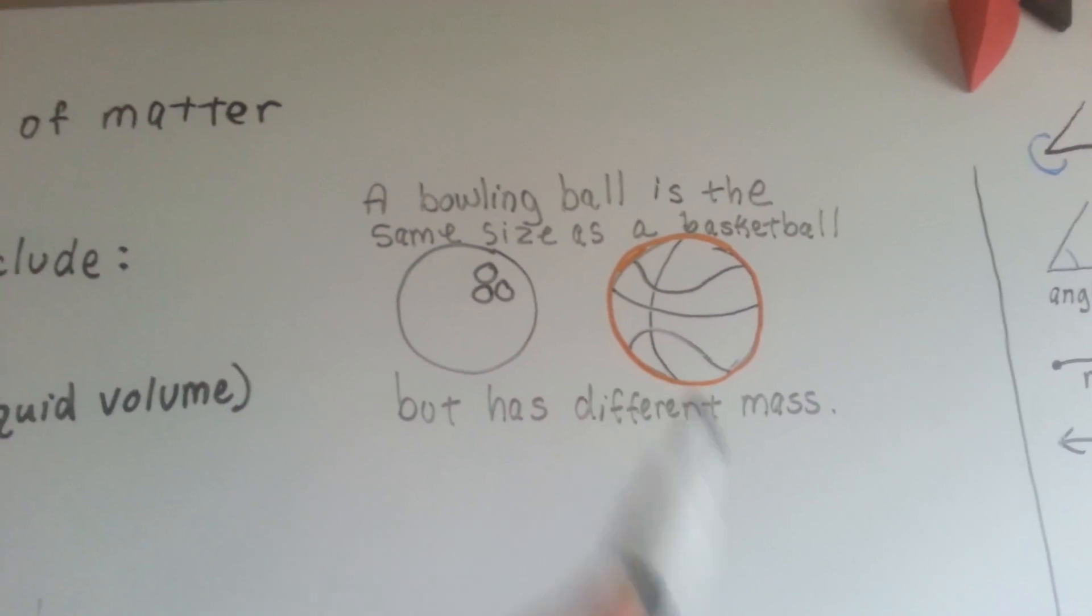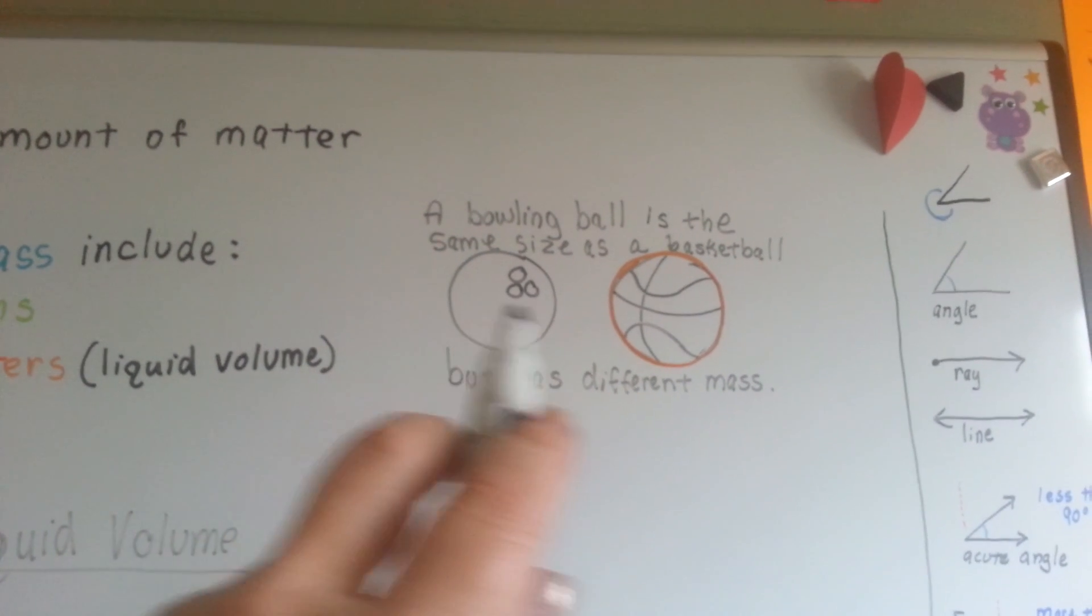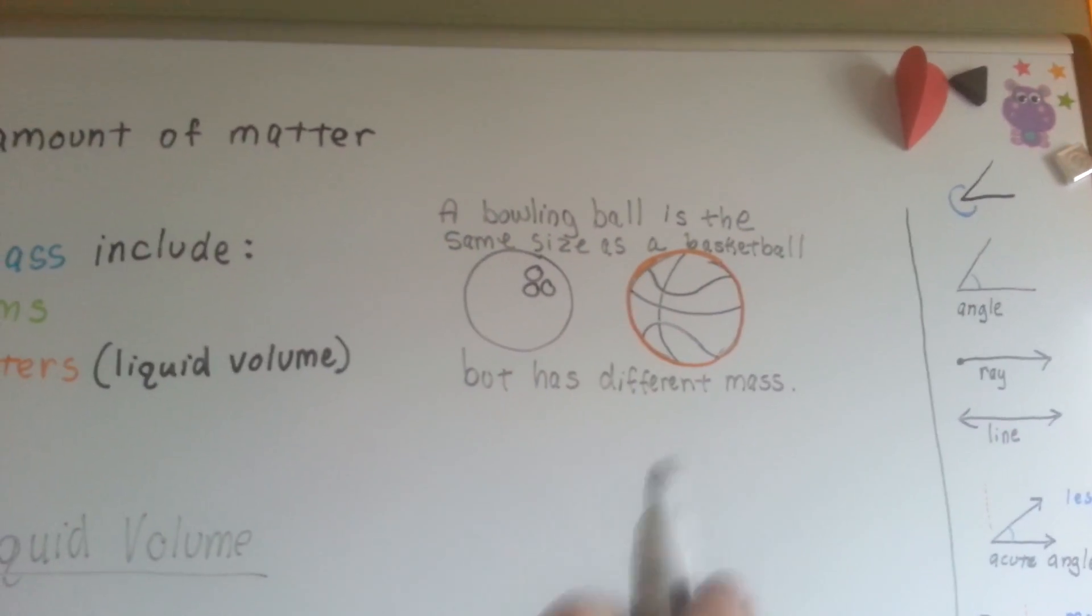And a basketball has air inside and it's much lighter. So even though they're the same size and take up the same outside space, they have different mass.